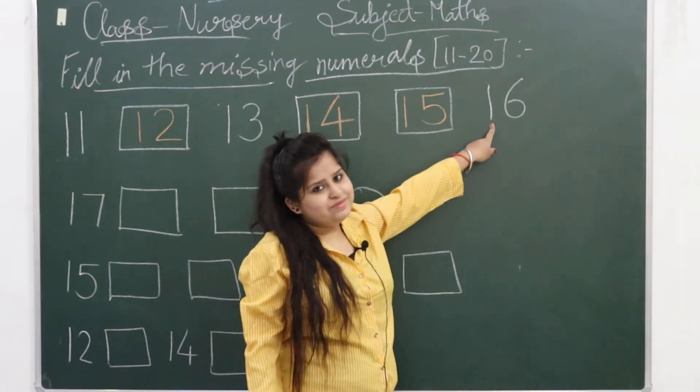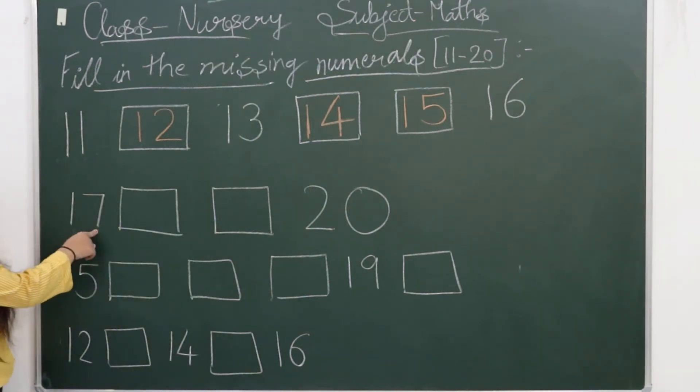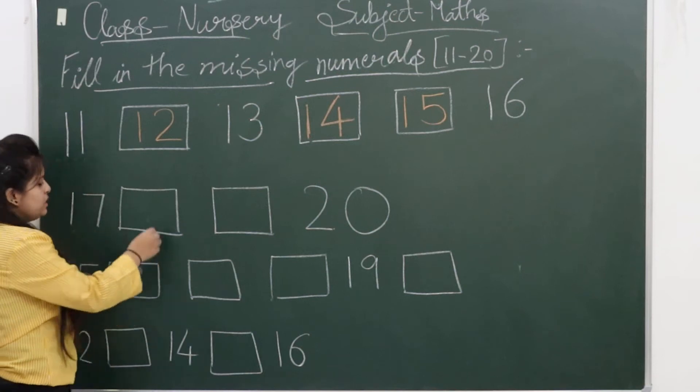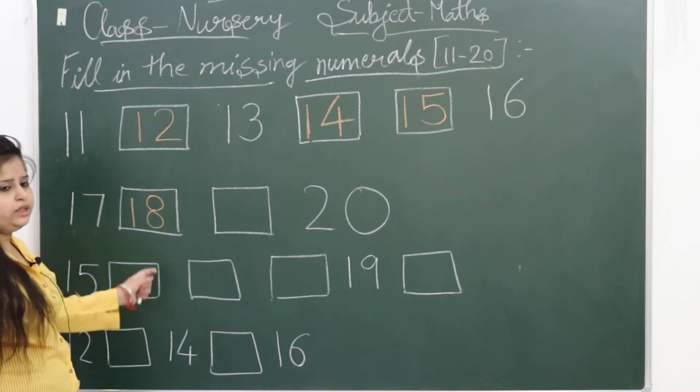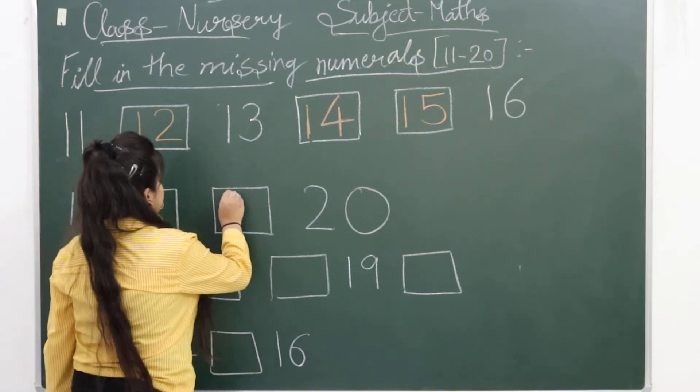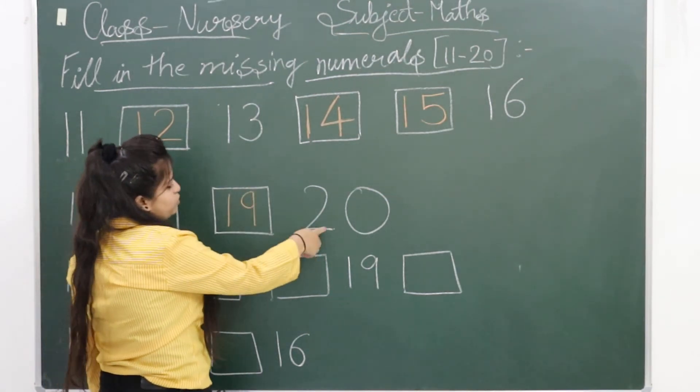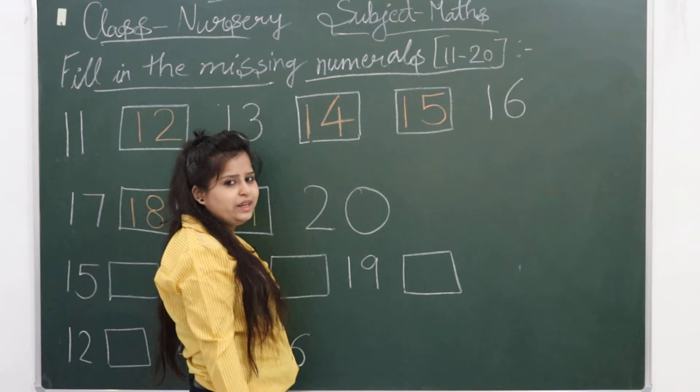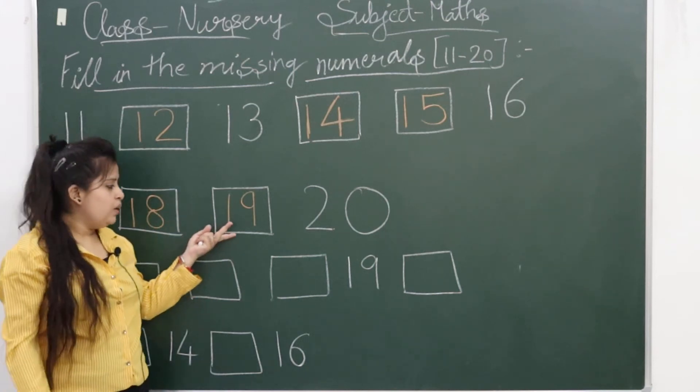And the last one: 1-6 sixteen. So here comes number 1-7 seventeen, then comes 1-8 eighteen, 1-9 nineteen, and then comes 2-0 twenty. Okay, so this is 1-7 seventeen, 1-8 eighteen, 1-9 nineteen, and then 2-0 twenty.